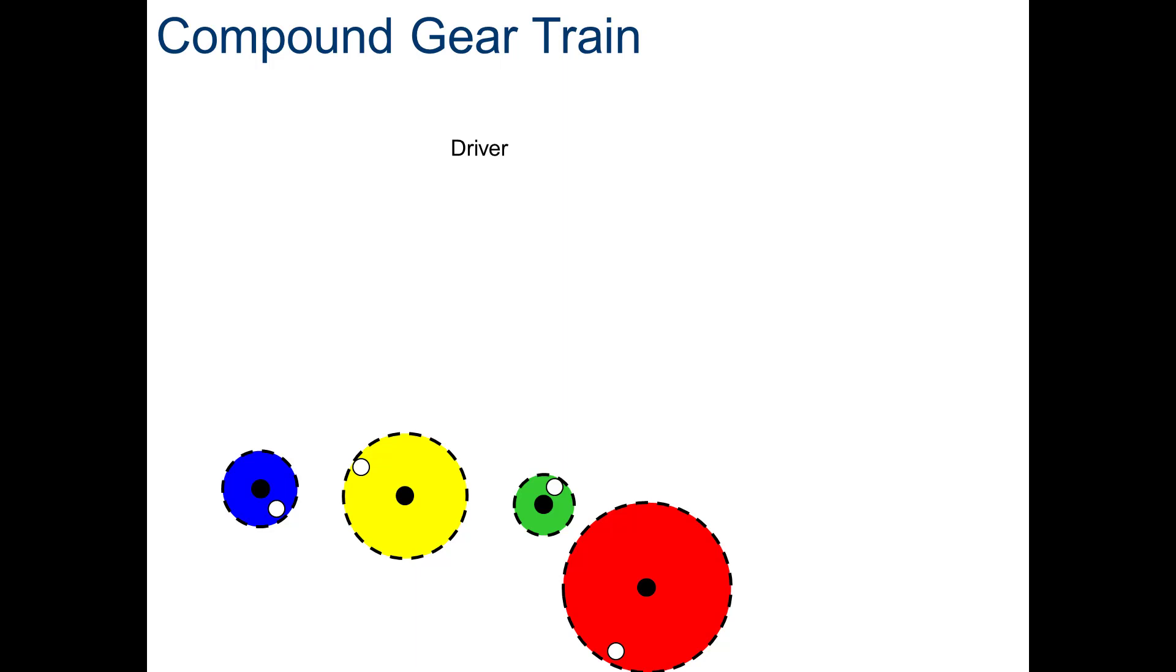Alright, now we look at a compound gear train. A little bit more common, we can achieve much greater gear ratios. A compound gear train in drives involves gears which share shafts. So, if we look at this, our driver gear, being the green gear, meshes with the yellow gear, and you can see the yellow gear spins slower than the green gear because it's larger.